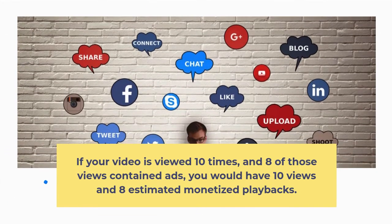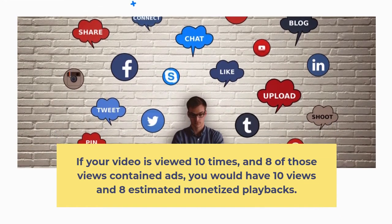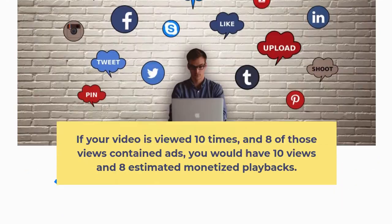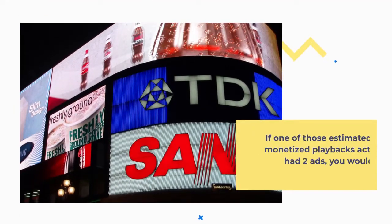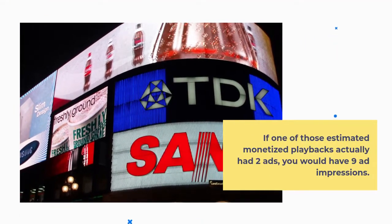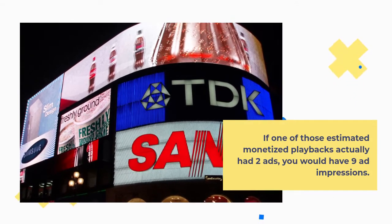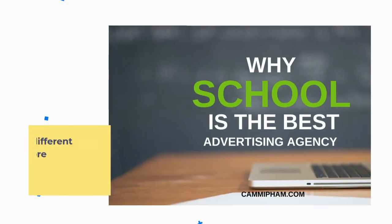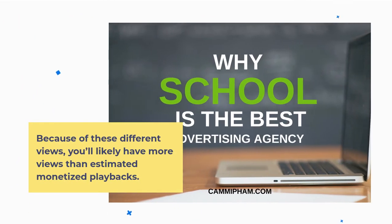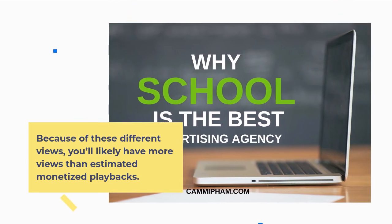If your video is viewed 10 times, and 8 of those views contained ads, you would have 10 views and 8 estimated monetized playbacks. If one of those estimated monetized playbacks actually had 2 ads, you would have 9 ad impressions. Because of these different views, you'll likely have more views than estimated monetized playbacks.